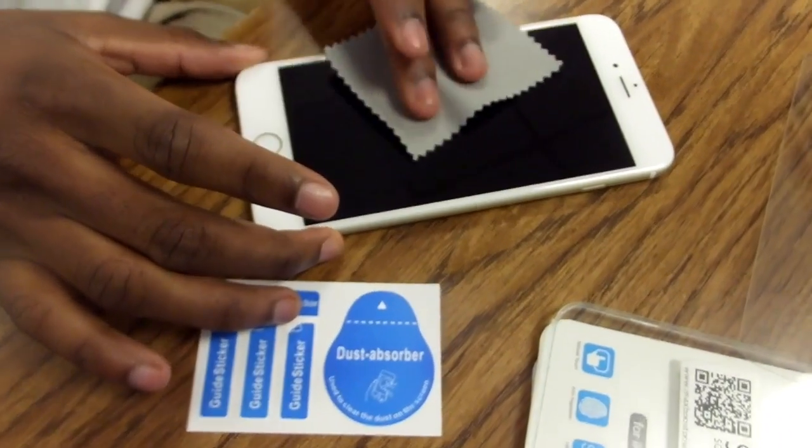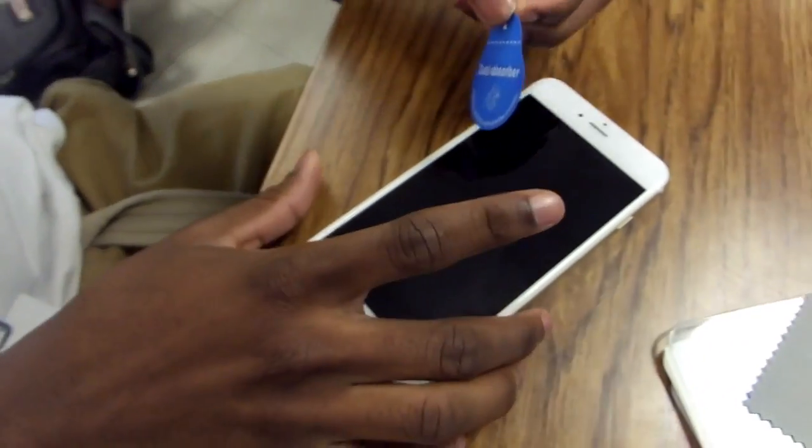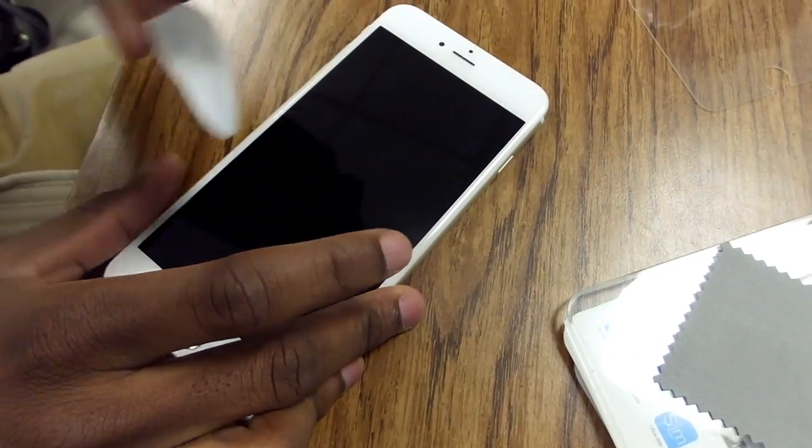After you're done using that, you actually come with this dust absorber and what that does is actually picks up anything that's sticking and it's kind of difficult to actually pick up. Once you've found the pieces, if it doesn't come with this you can actually get tape, it does the same thing, it's just easier to handle with this.